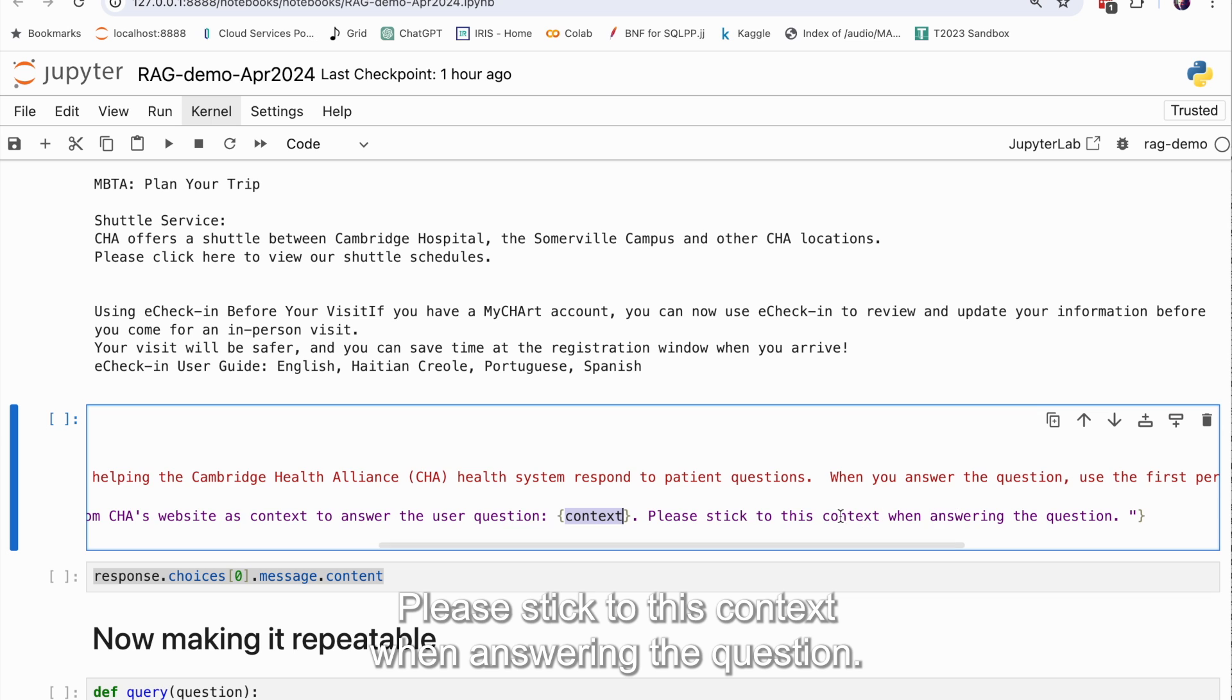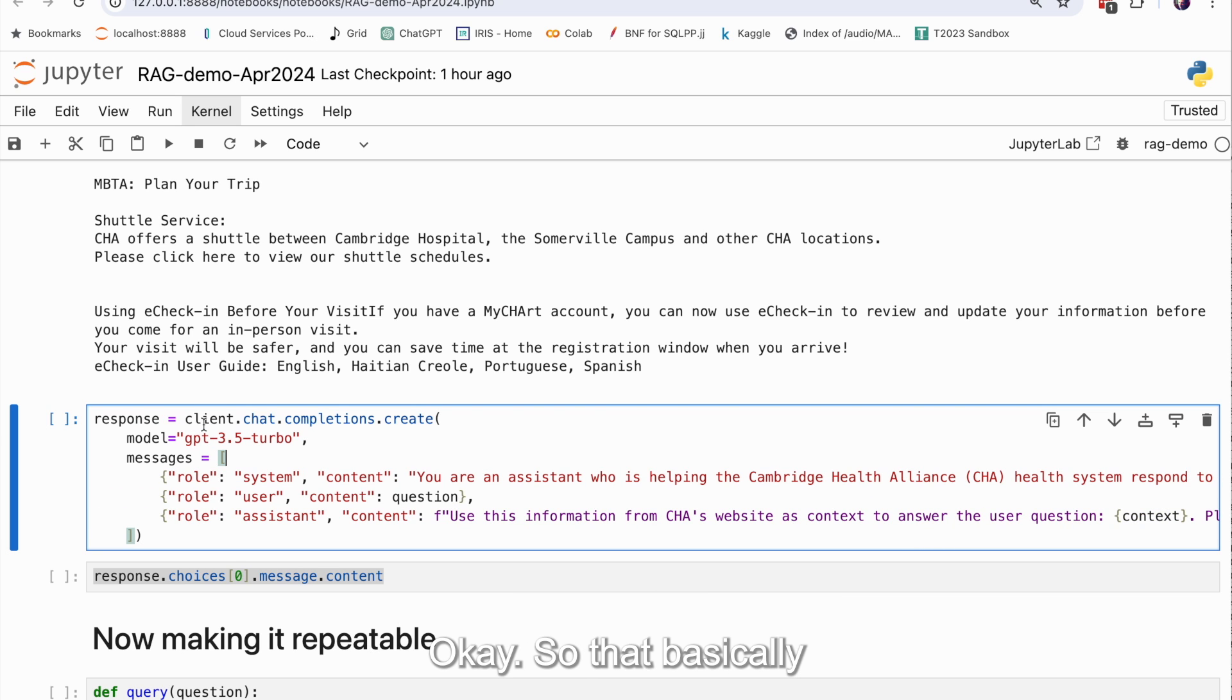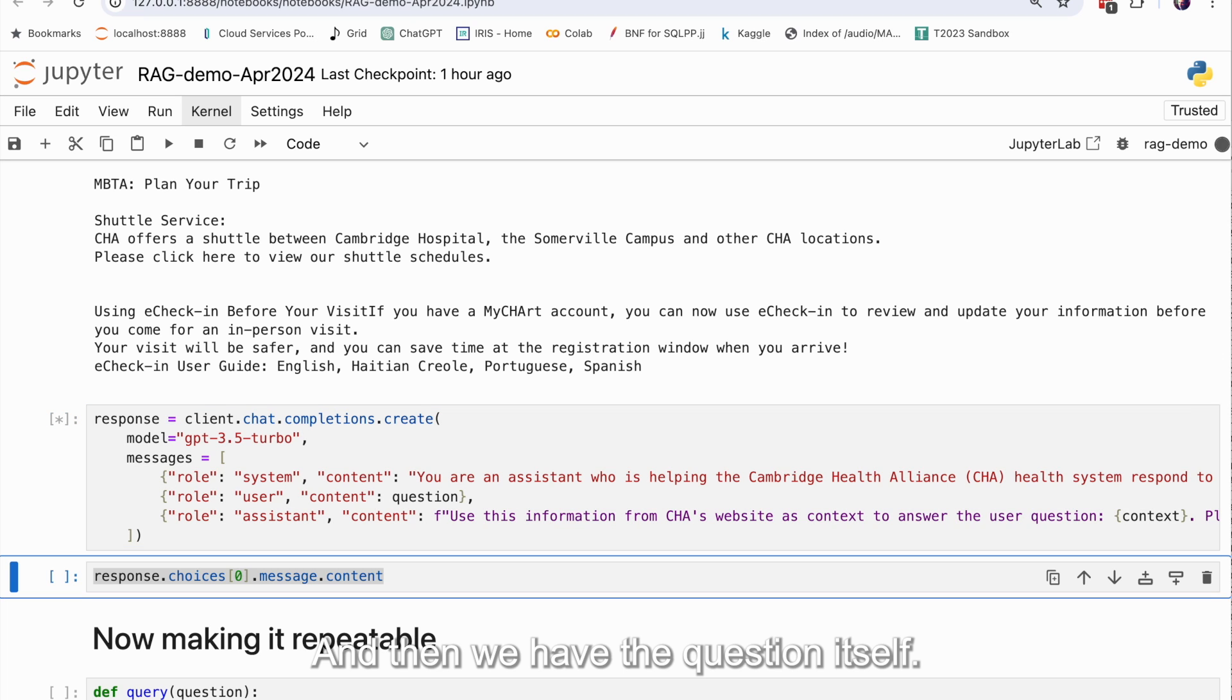And that context variable will be replaced by all this text up here. Please stick to this context when answering the question. So that basically completes the prompt before the prompt. We have instructions. We have some context that GPT-3.5 Turbo should use to answer the question, and then we have the question itself.